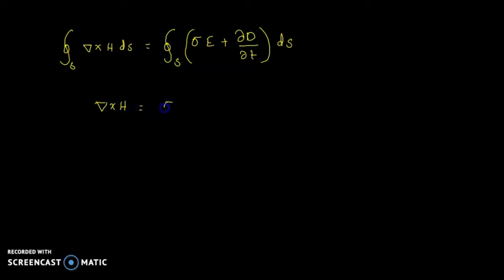So this becomes curl H equals sigma E plus partial derivative of D with respect to t. We know the relationship between D and E: D equals epsilon E. This is Maxwell's equation in differential or point form from Ampère's law.